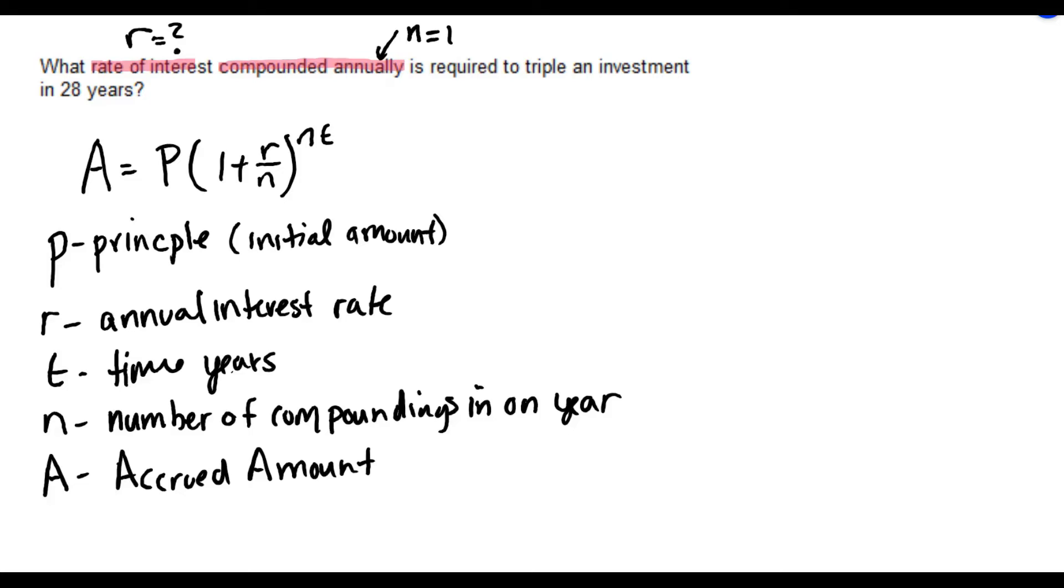A is required to triple the investment. That's going to be important in just a minute. Triple in 28 years, so T is 28.